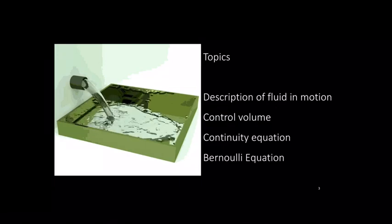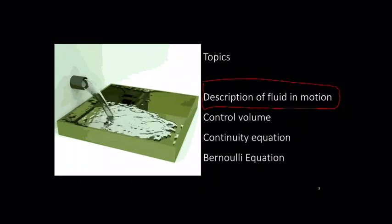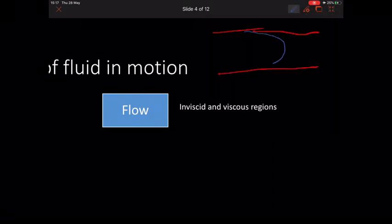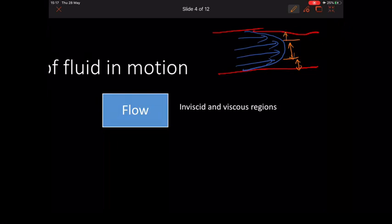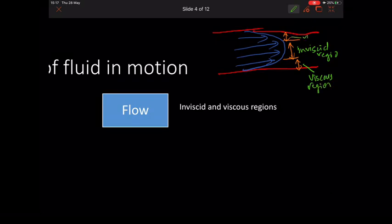For today we will look at the description of fluid in motion. Firstly, flow: as we know, there are two regions that influence flow. You have a pipe like this and water flowing in it. This situation gives you two regions — a first region and a second region. This region is the inviscous region, and these regions closer to the wall are the viscous regions.